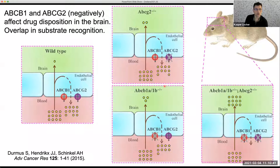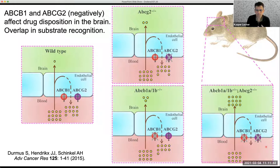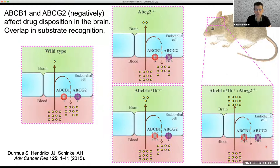Even though multi-drug resistance is not the only mechanism by which cancer cells become resistant, overexpression of these proteins often correlates with poor patient outcomes. Drugs used to poison tumors stop working — not just one drug but suddenly all of them, because overexpression kicks all these drugs out of the cell. An experiment from Alfred Schinkel's lab demonstrates that removing either ABCB1 or ABCG2 from the mouse brain still leaves resistance at the blood-brain barrier, indicating overlap in substrate specificity. When both transporters are removed, the brain becomes very sensitive.